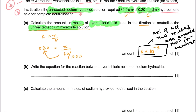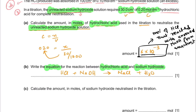In the next part, they say: write the equation for the reaction between hydrochloric acid and sodium hydroxide. This is a simple neutralization reaction: HCl + NaOH → NaCl + H₂O.